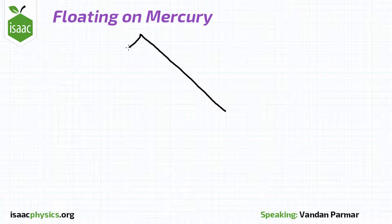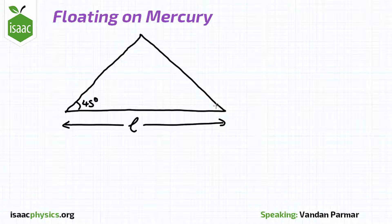In this question we have an isosceles prism with base length L, angles 45 degrees, and is made of glass with refractive index N1. The prism is floating on mercury and is submerged to a depth H.